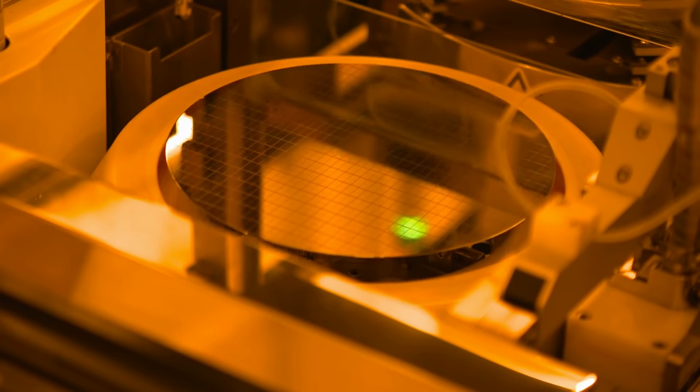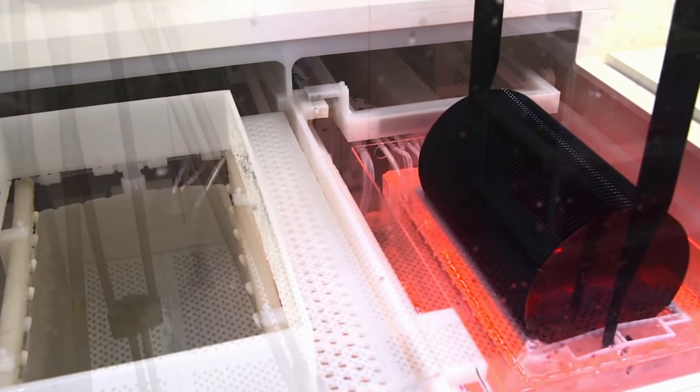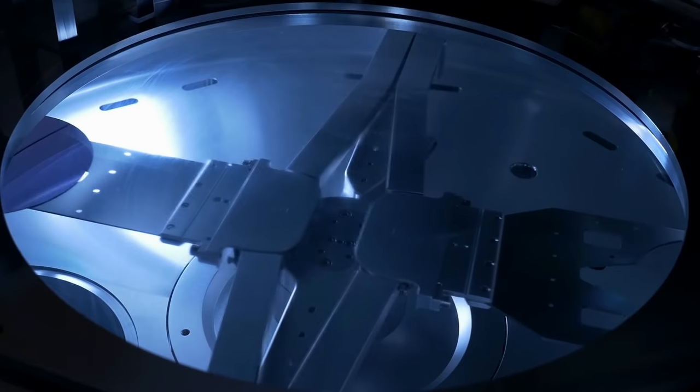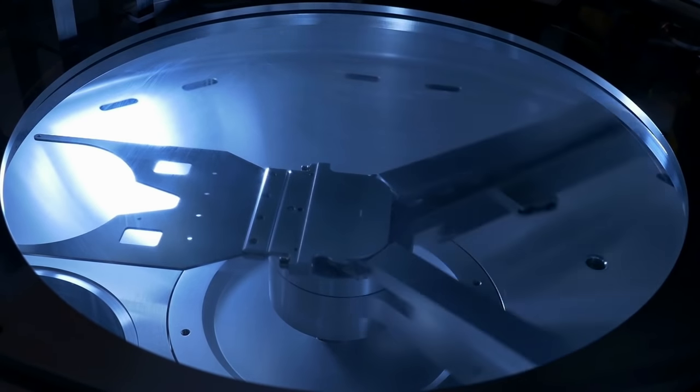After this, the exposed layer of oxide is etched off in the areas that have been developed using wet or plasma etching. With plasma etching, special gases bond with the substrate to be removed in the reaction chamber. This enables microscopic layers to be removed in the windows that were exposed and developed in the previous step.